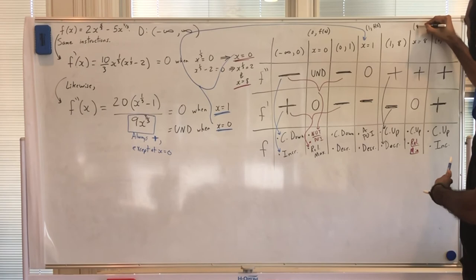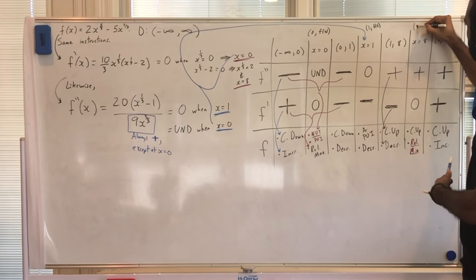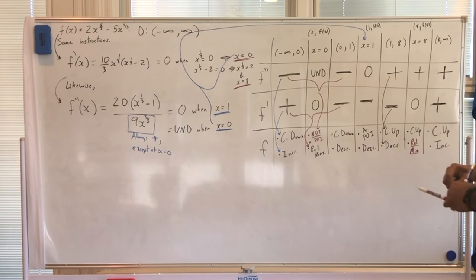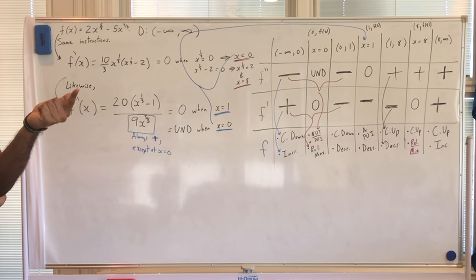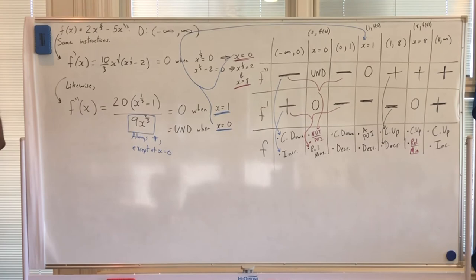We are done with the calculus information: relative extrema (max at (0,0), min at (8,−16)), point of inflection at (1,−3), and intervals of concavity all established. Now for pre-calculus: asymptotes and intercepts.